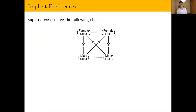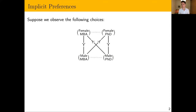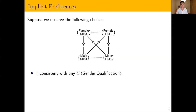I'd like to begin with a thought experiment. Imagine you see a hiring manager making hiring decisions. They're looking at candidates who differ in two respects: gender and qualification, which can be an MBA or PhD. When candidates have the same qualification, this manager chooses female candidates — the vertical choices. But when candidates have different qualifications, they choose male candidates — the diagonal ones.